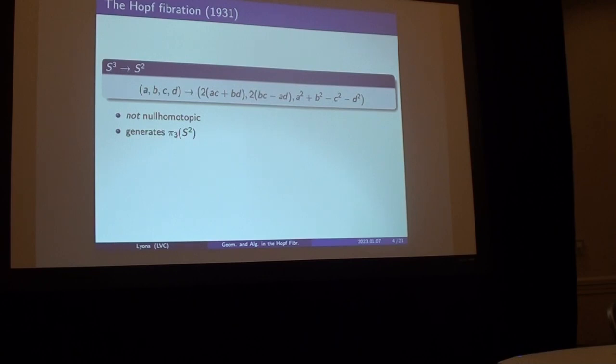And in topology, that's the words there are higher homotopy groups. This says that there's a third homotopy group of a two sphere that's not trivial. This map, in fact, is a generator.